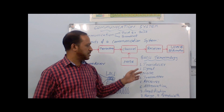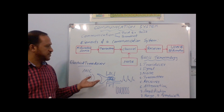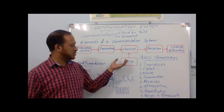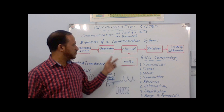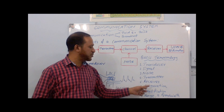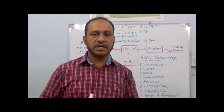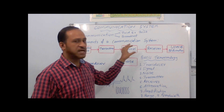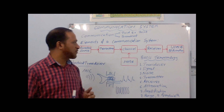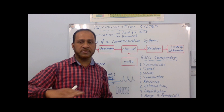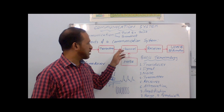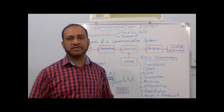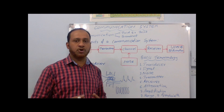Other basic terminologies: a transducer we have already explained. A signal is the electrical variation of a particular physical variable like sound or video. Noise is the disturbance in the medium which can distort the signal. Attenuation means decreasing the energy of the signal when it is transmitted through a channel, because of the resistance of the channel or due to the inducing of current in the medium, which reduces the energy of the transmitted wave.